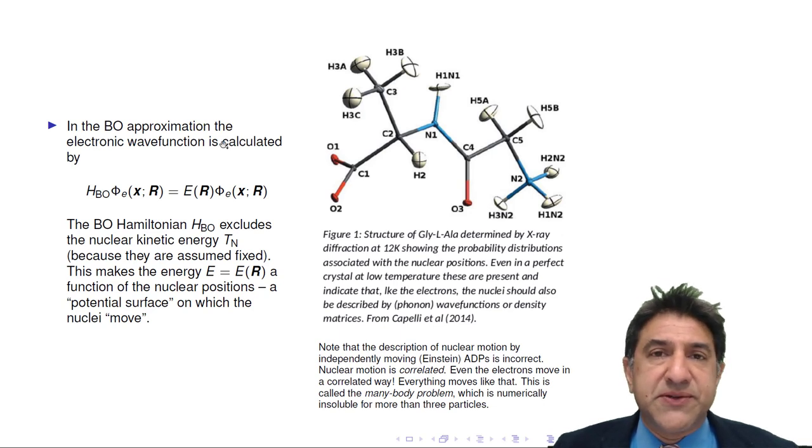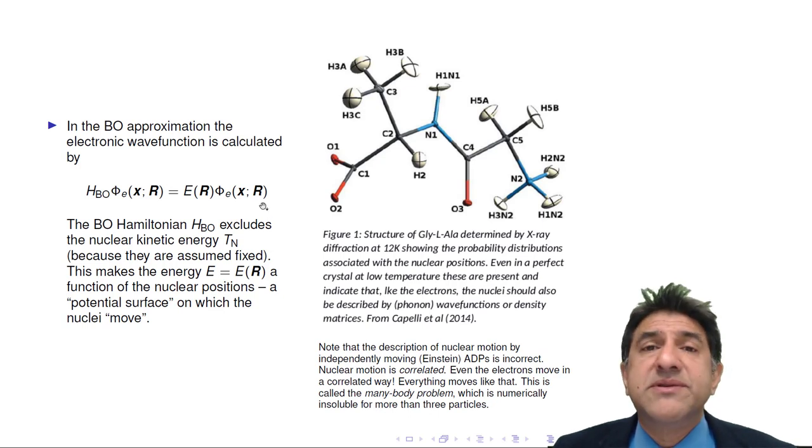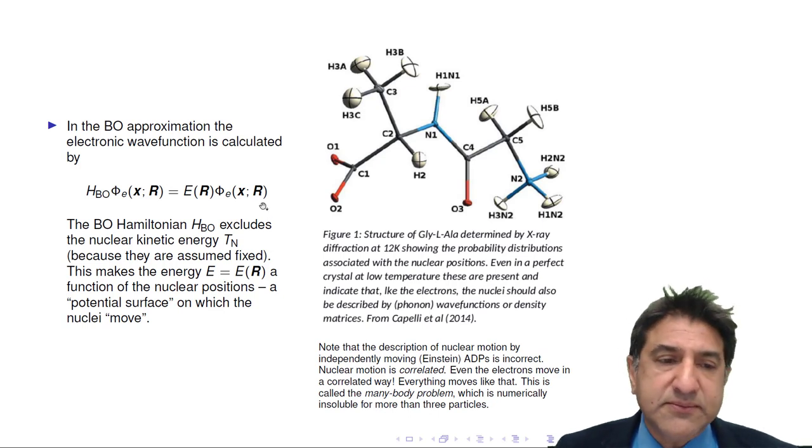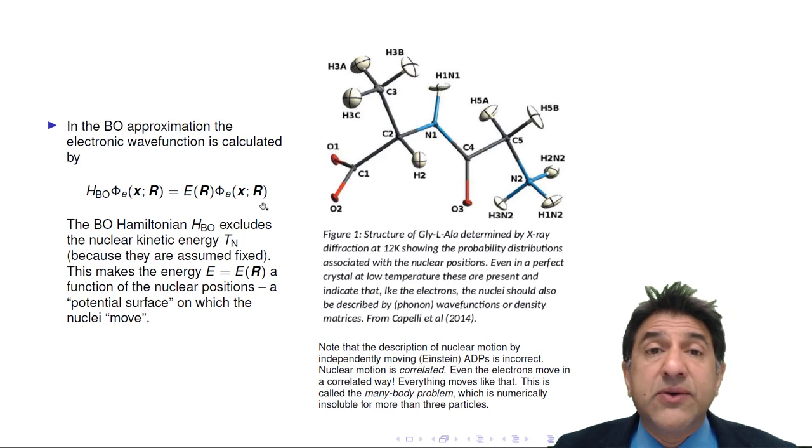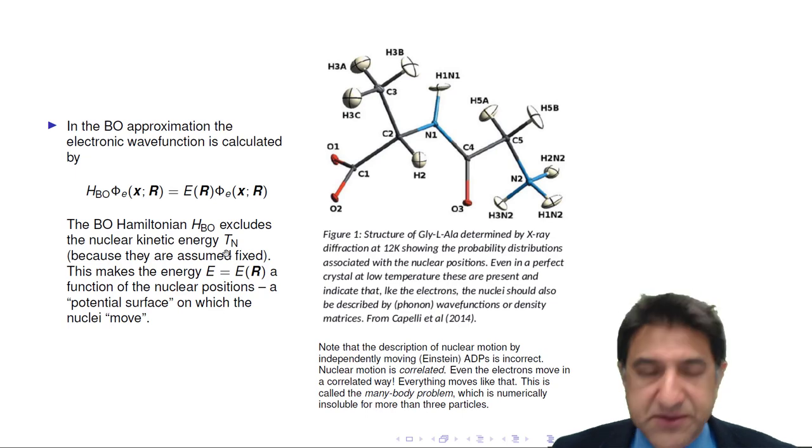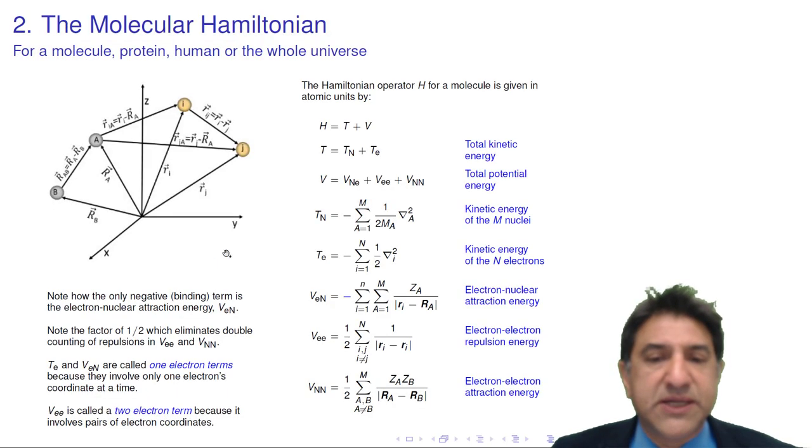So in the Born-Oppenheimer approximation, drilling down a little bit more, what is it exactly? Well, we definitely fix the positions of the nuclei, but we also, in practice, remove the kinetic energy of the nuclei from the Hamiltonian. So this term T_n, let me go up here, back to where we were in the second lecture, T_n, we just ignore it. We set it to zero, as we should. If the nuclei are fixed in space, they don't have kinetic energy.